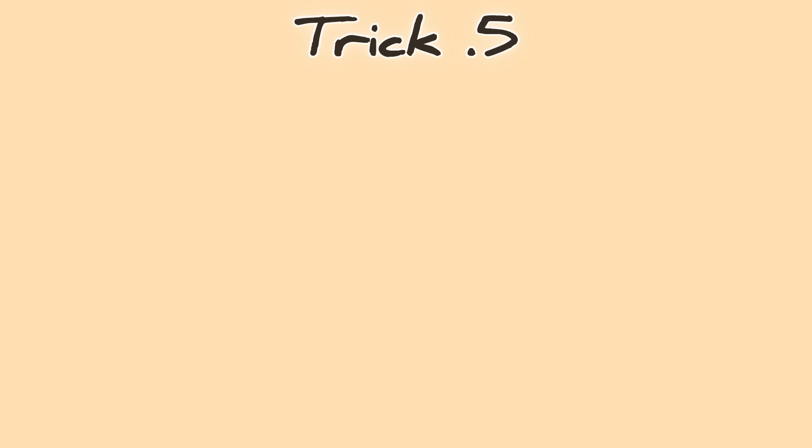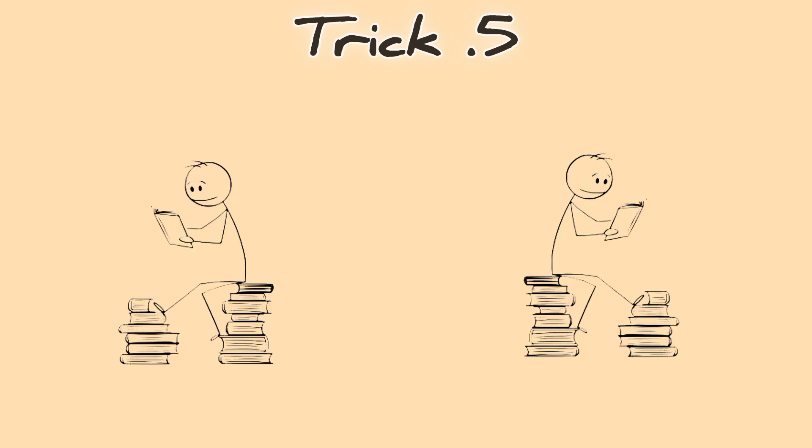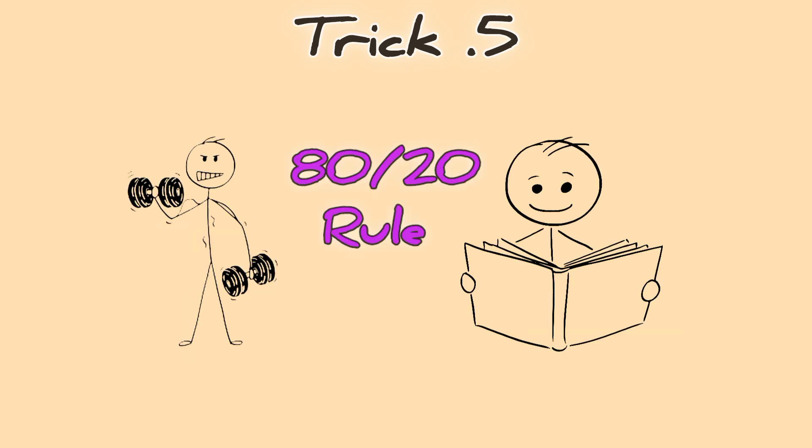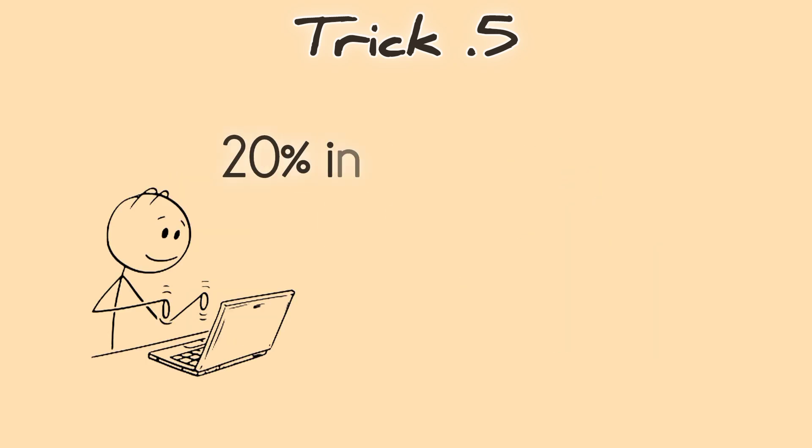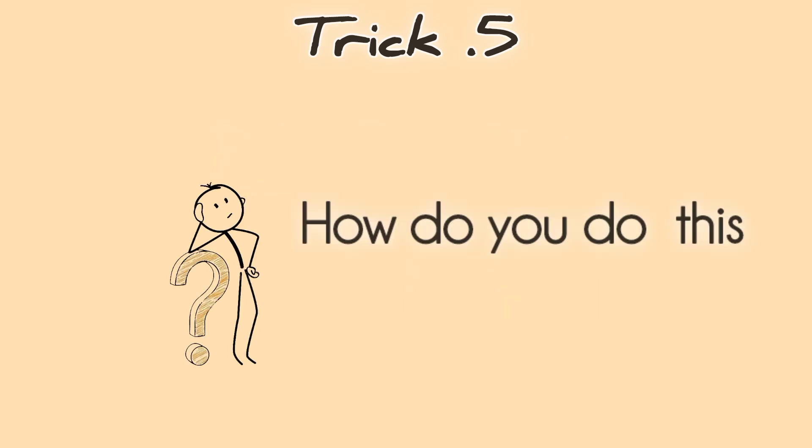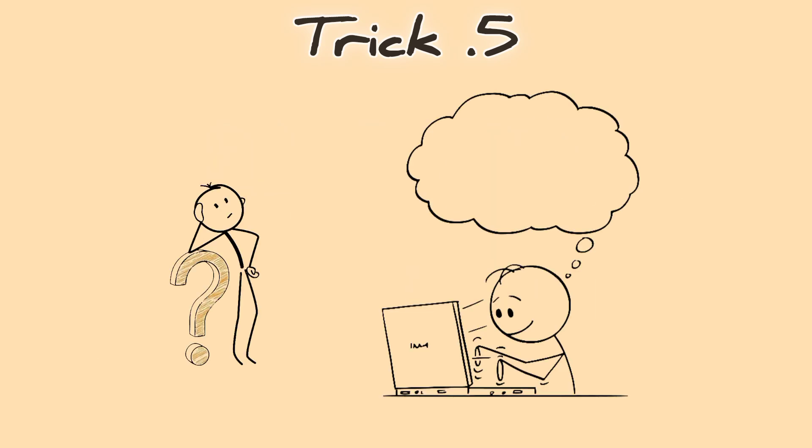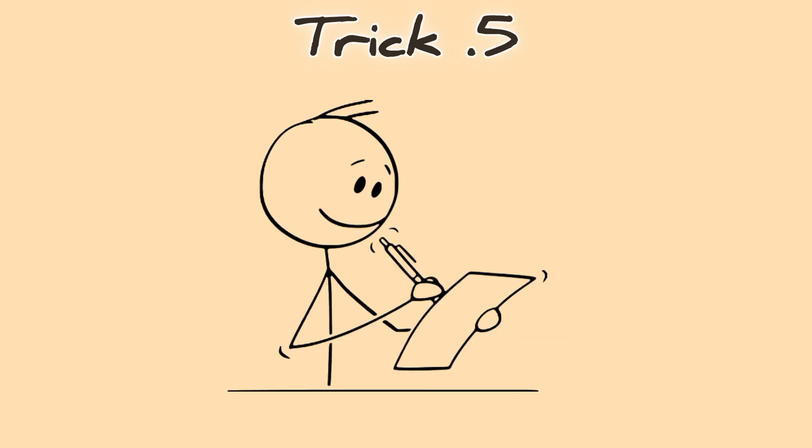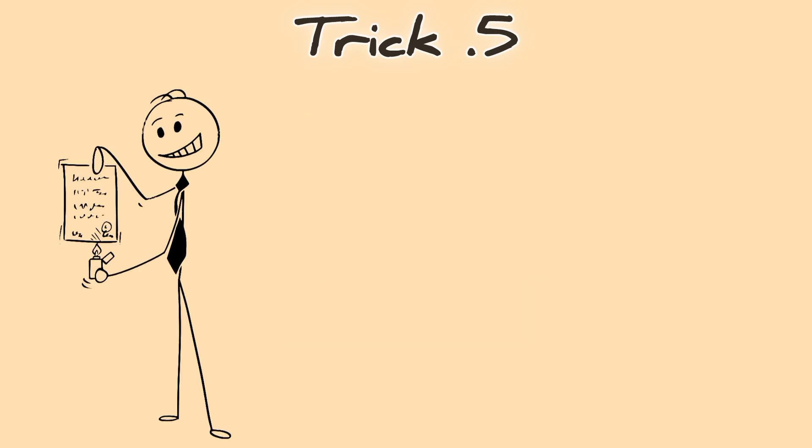Memory Trick 5: The 80-20 Study Rule. Most students waste 80% of their time studying things they'll never be tested on. But smart students follow the 80-20 rule. They focus on the 20% of information that gives them 80% of the results. How do you do this? Look at past exam papers. See what questions come up the most. Highlight key points in your textbook. Ignore unnecessary details. Master the concepts first. Don't memorize blindly. This isn't just about memory. It's about studying smarter, not harder.